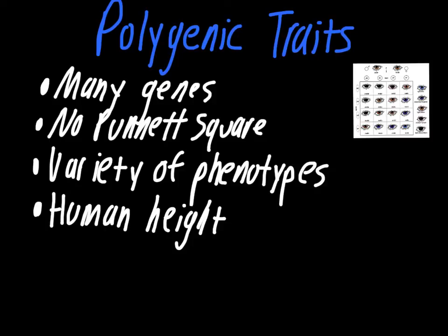Unfortunately, there's no easy way to do Punnett squares for polygenic traits because there's never an exact set number of outcome options — the traits are too varied. You should be familiar with the concept, know that polygenic means many genes, and know that you get a wide variety of phenotypes, but this is not something we'll do problems on in class. Make sure you answer the questions at the end of the video.